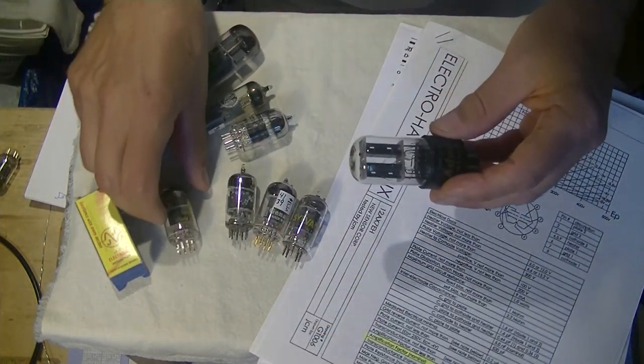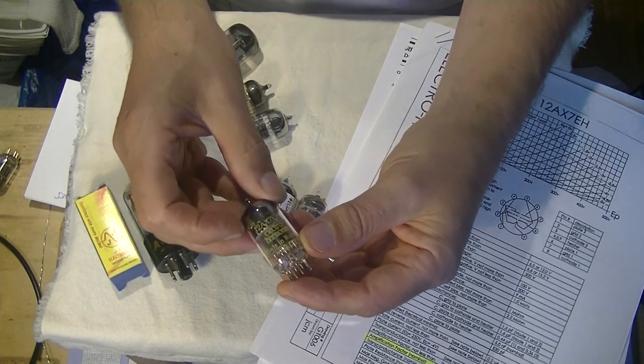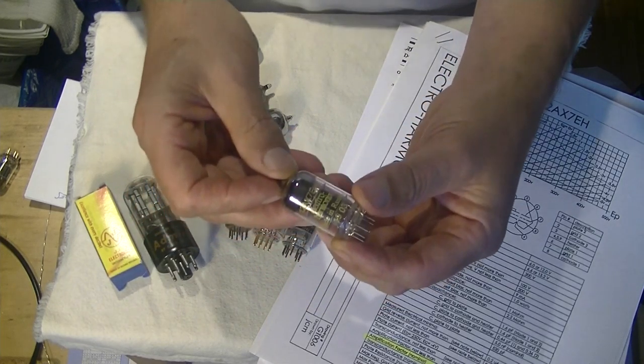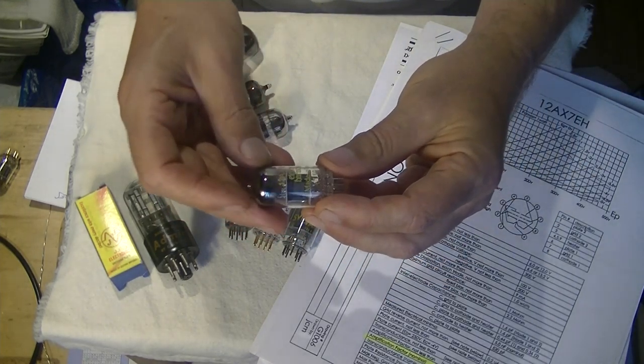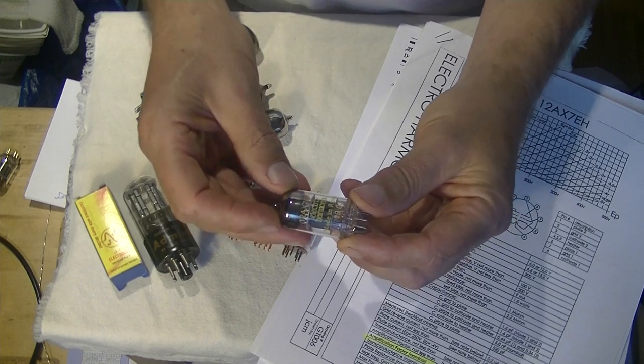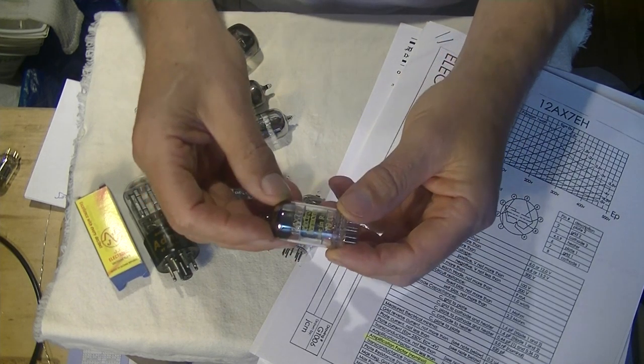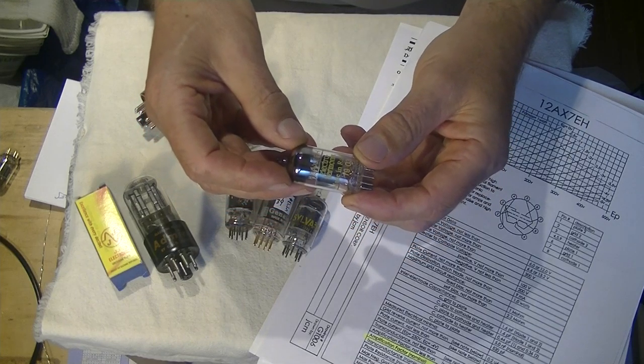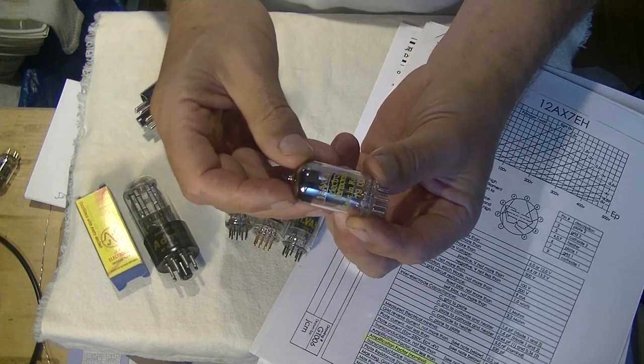So what does this thing do, the 12AX7? Almost all vacuum tubes basically are amplification devices. And before solid state, before transistors came along, if you wanted to amplify something or do virtually anything electrically, you have to have a vacuum tube.